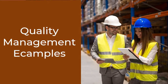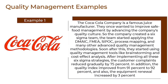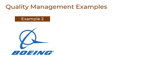Now let us go through the last topic of today's session, that is, quality management examples. The first example is the Coca-Cola company. They once wanted to improve safe food management by advancing the company's quality culture. So the company created a Six Sigma team. The team started applying the DMAIC, FMEA, SIPOC, process mapping, and many other advanced quality management methodologies. Soon after this, they started using quality management tools like brainstorming and cost-effect analysis. After implementing all these Six Sigma strategies, the customer complaints reduced gradually by 75%. In addition, the quality index improved from 91% to 92%, and also the equipment renewal increased by 3%.